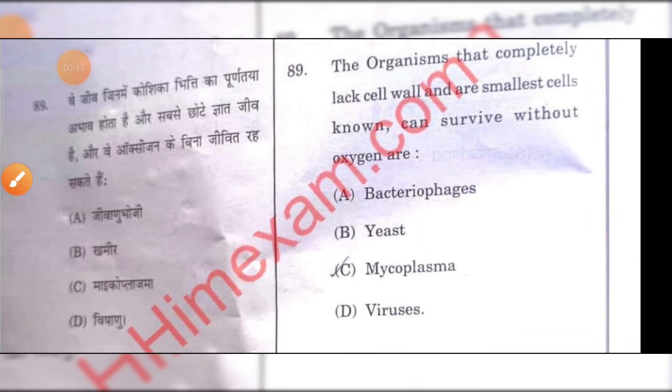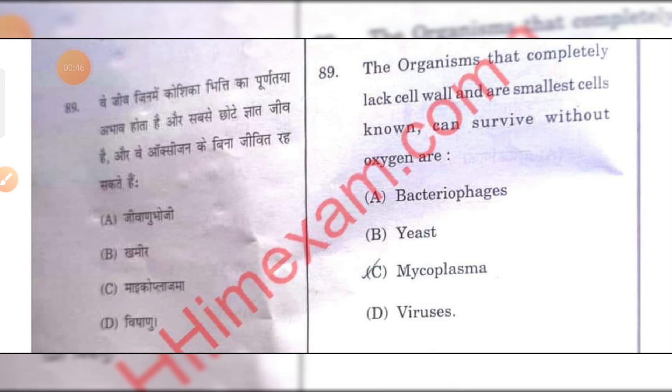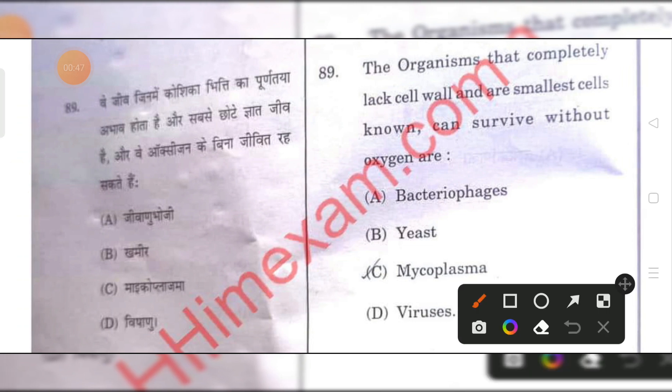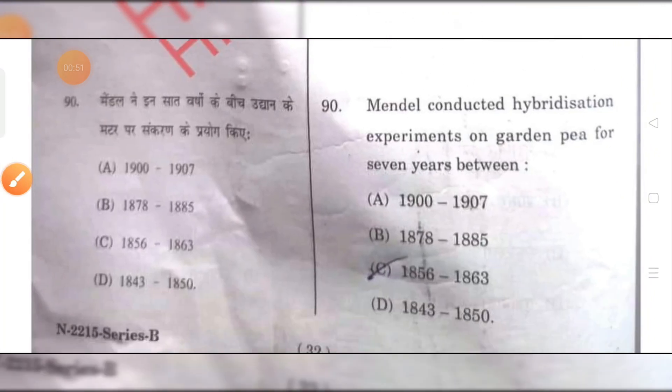The organism that completely lacks a cell wall and is the smallest cell known that can survive without oxygen is mycoplasma.